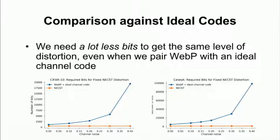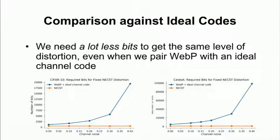So what I mean by that is when we compare our system to a really idealized system, under a separation scheme, where we take a really good compression mechanism like WebP, and then pair it with an ideal channel code, so basically like the best that you can do theoretically, we require a much smaller number of bits to be transmitted to get to the same error rate when compared to this ideal system. And the difference becomes a lot greater as you increase the level of channel noise.